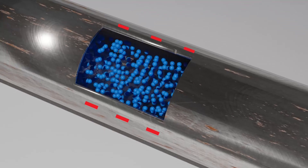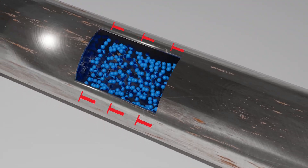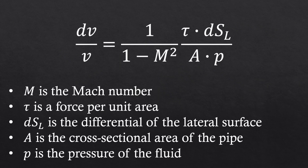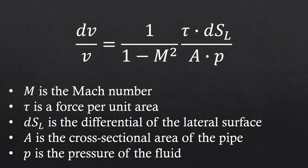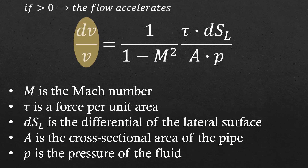Remember, there is friction acting on the fluid. If we do the math, we come up with this equation. In simple terms, if this ratio is positive, it means that the flow is accelerating.